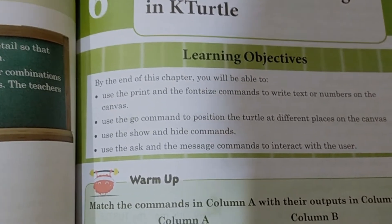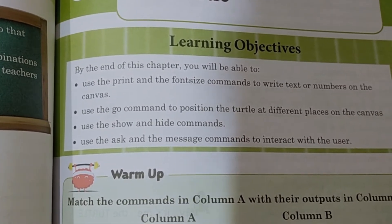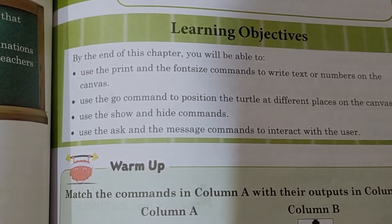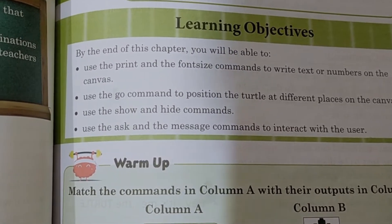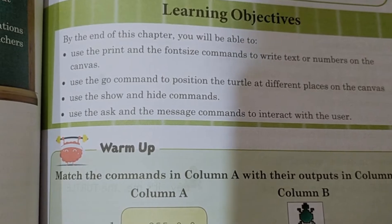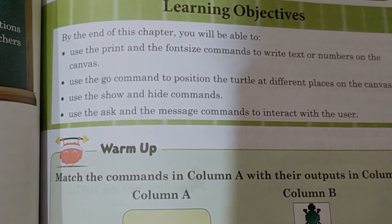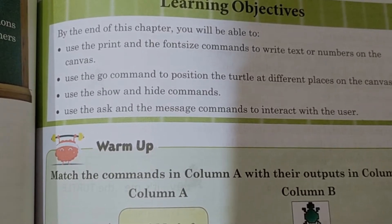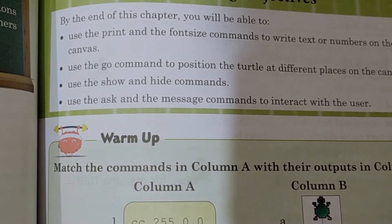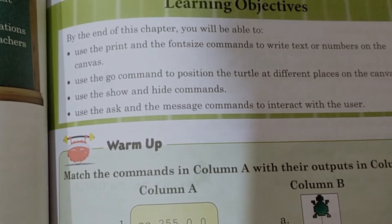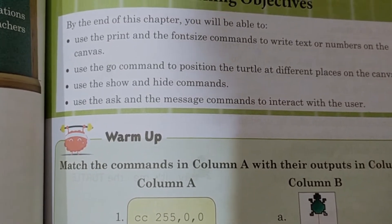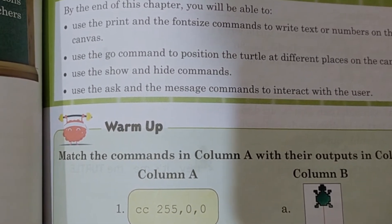The learning objectives are: by the end of this chapter, you will be able to use the print and the font size command to write text and numbers on the canvas. We will also learn to use the go command to position the turtle at different places on the canvas, use the show and hide command, and use the ask and the message command to interact with the user.